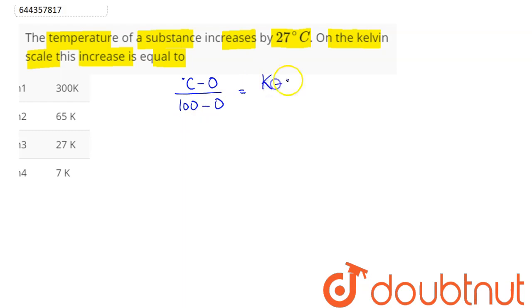This can be written as for Kelvin scale as K minus 273 divided by 373 minus 273.